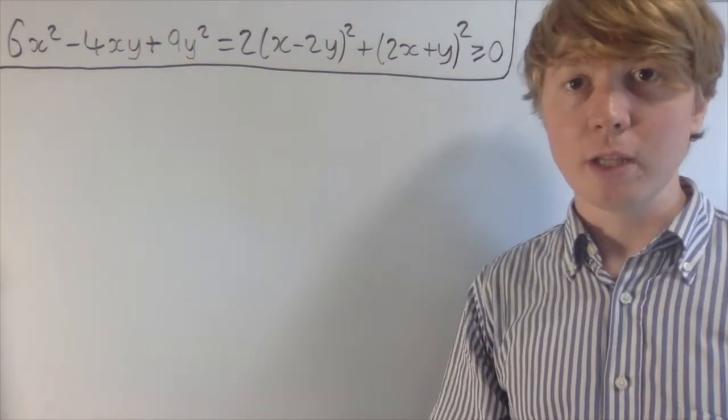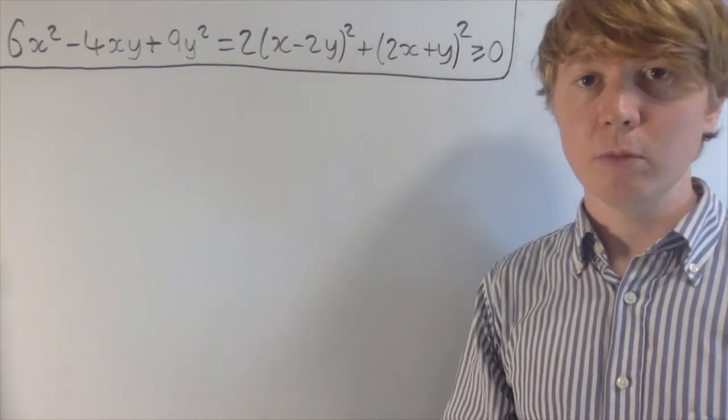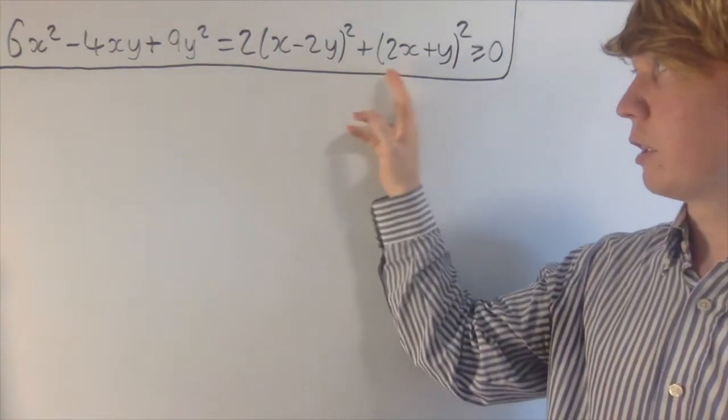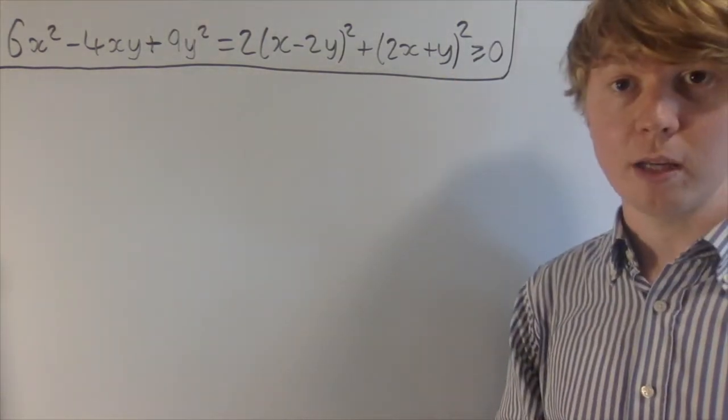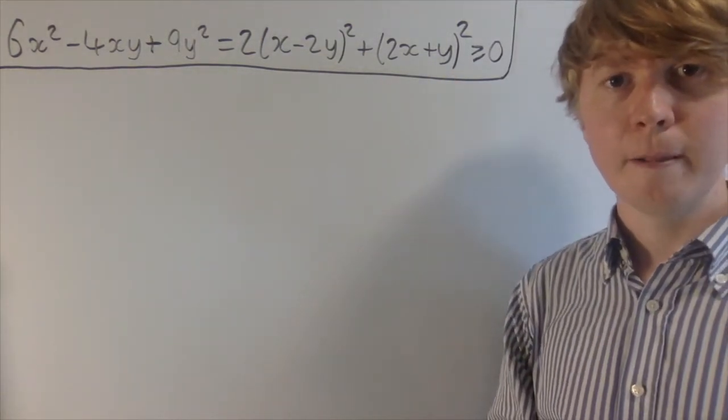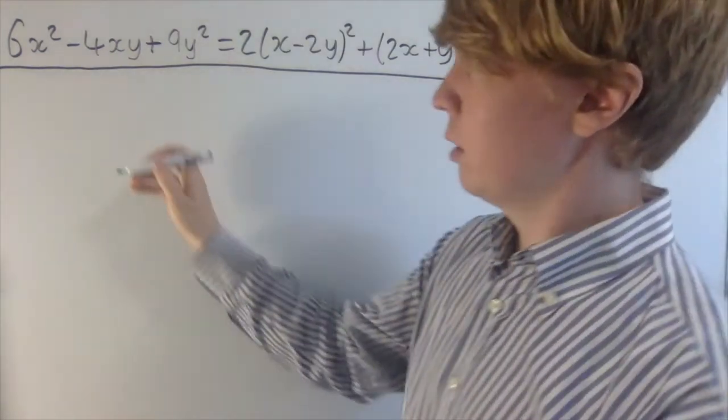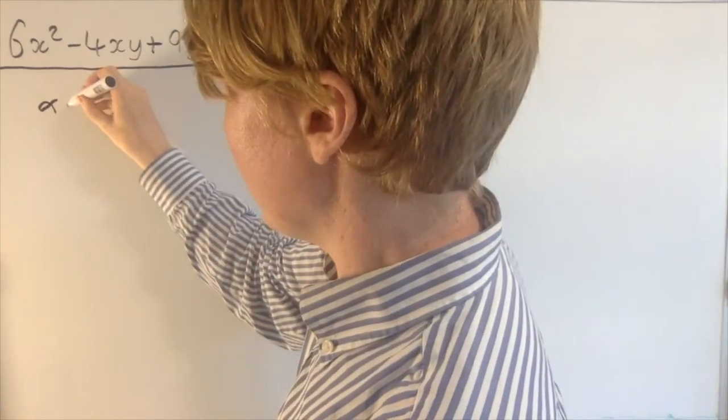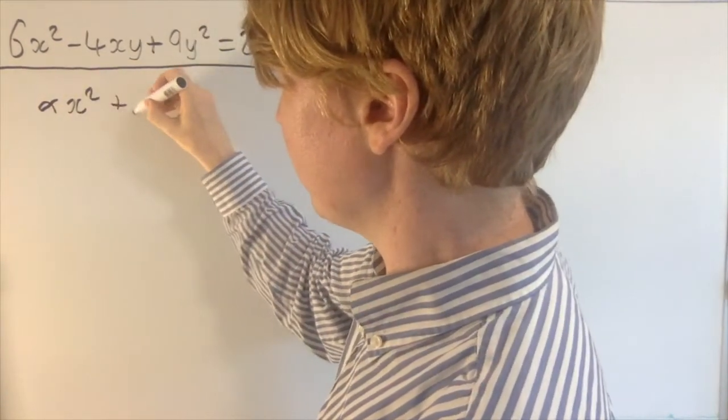So after all of that work with diagonalizing the matrix, seemingly out of nowhere we get this really satisfying expression, the sum of different things squared, that shows that this is greater than or equal to 0. So I'll have a go at briefly explaining just sort of where this kind of comes from, how we can apply this to similar problems in the future.